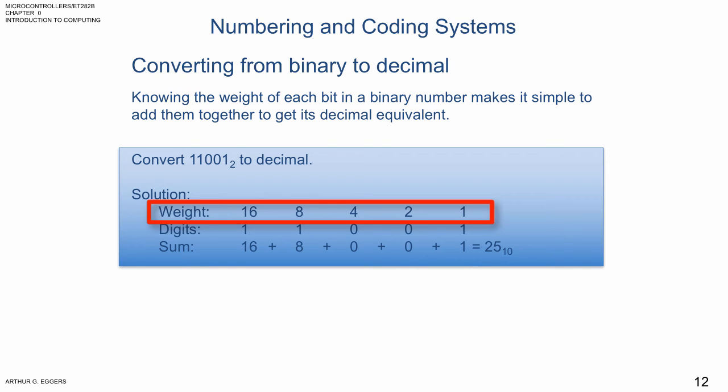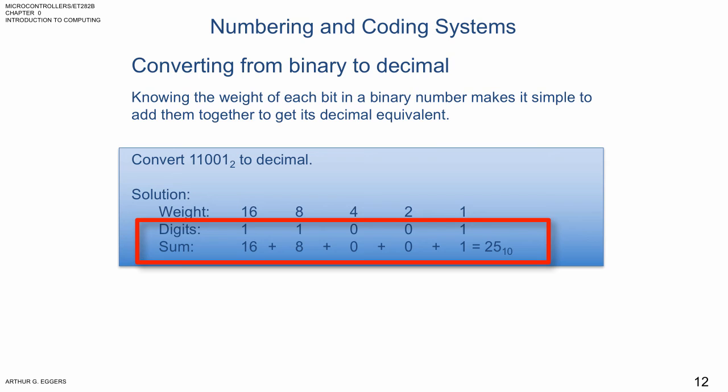So 1 times 16 is 16, 1 times 8 gives us an 8, 0 times 4 gives us a 4, and 0 times 2 gives us a 2, and then the last digit we have a 2 to the 0 or 1, so we end up with a 1. So again, now in the horizontal, 16 plus 8 plus 0 plus 0 plus 1 gives us a decimal equivalent of 25.